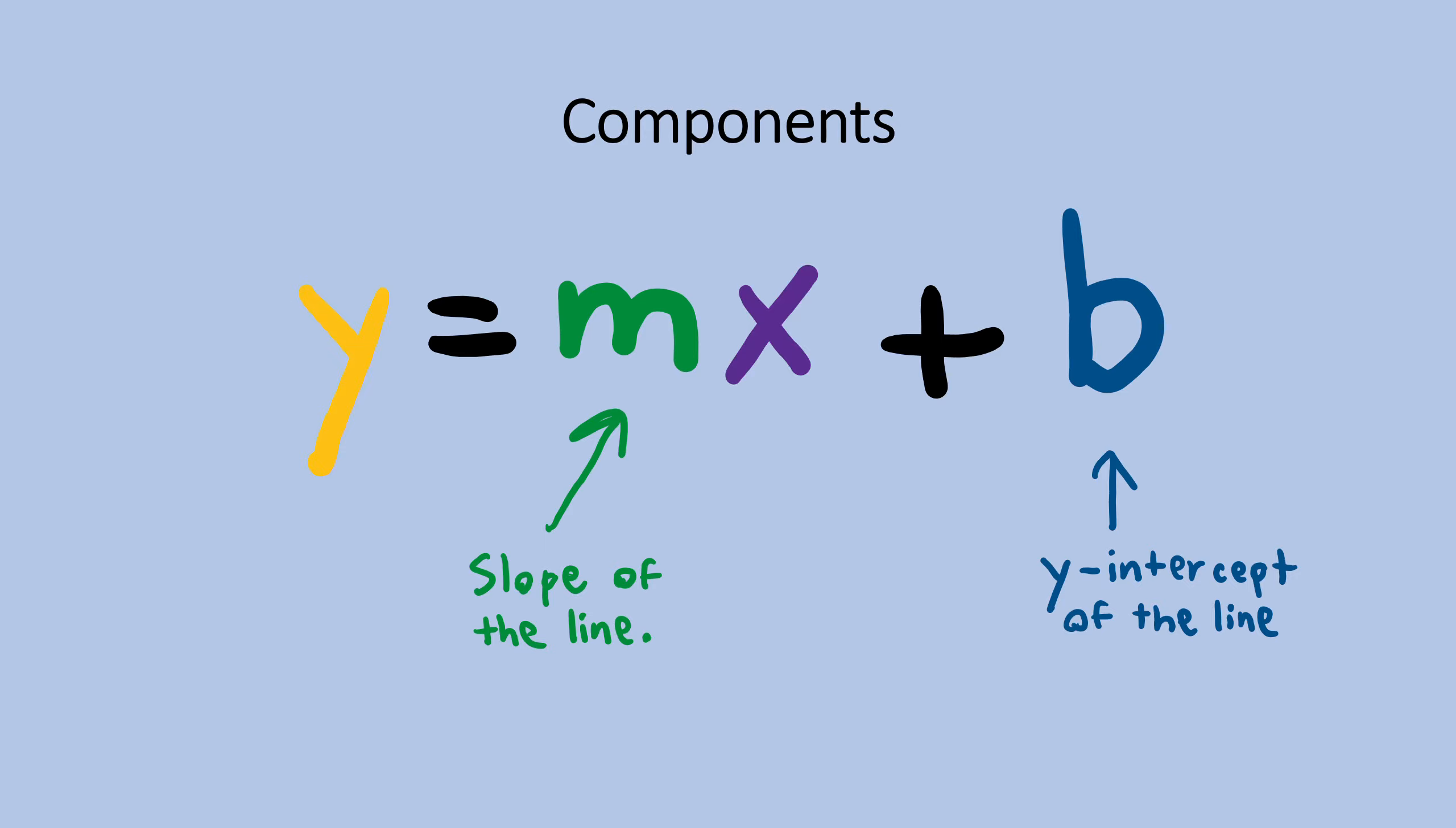Slope-intercept form has more than just a slope and a y-intercept though. It also has variables for a y-coordinate and an x-coordinate. Now that we briefly reviewed slope-intercept form, let's work on how to use it.